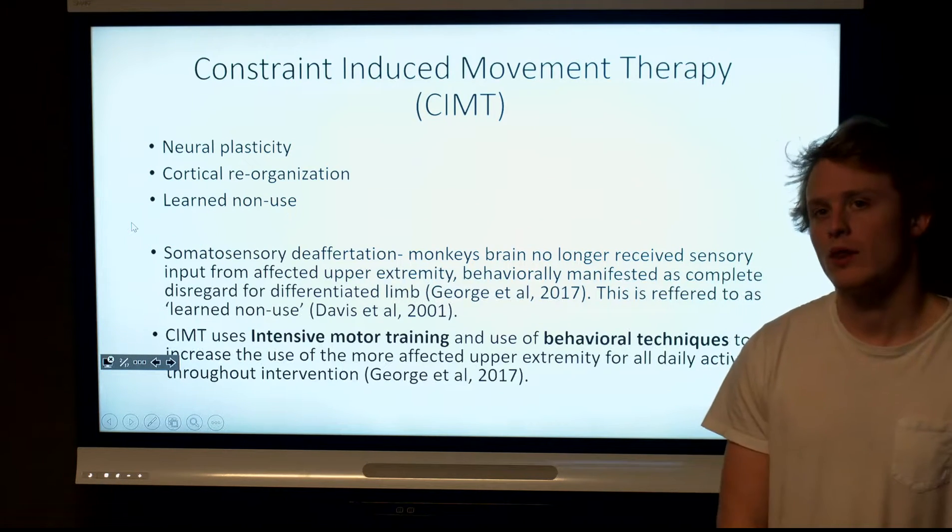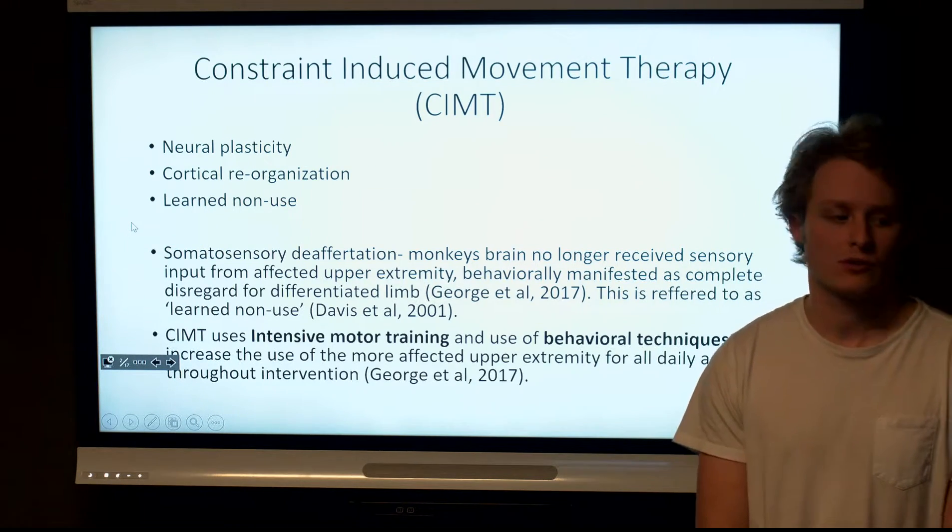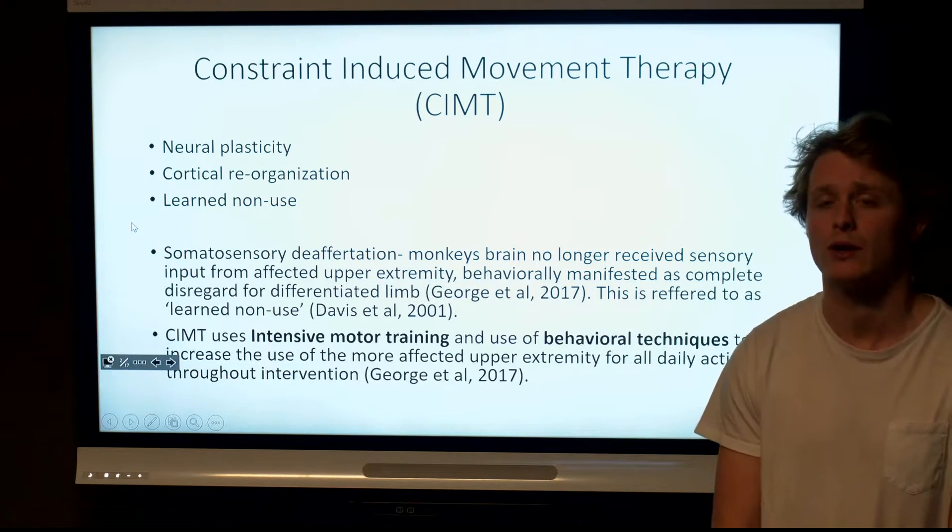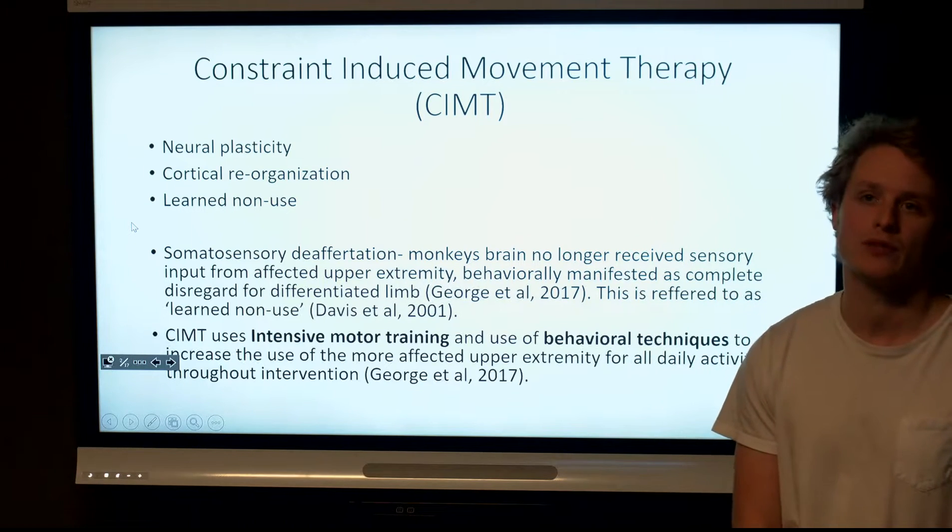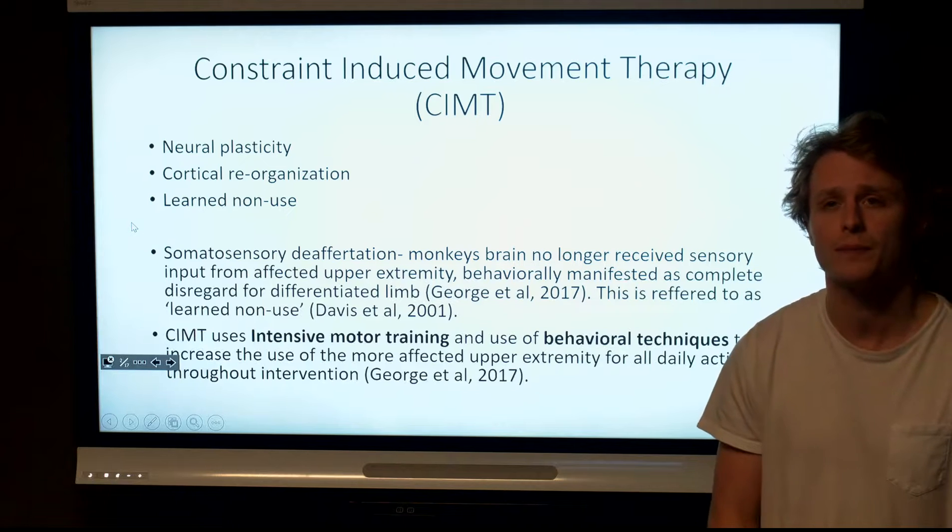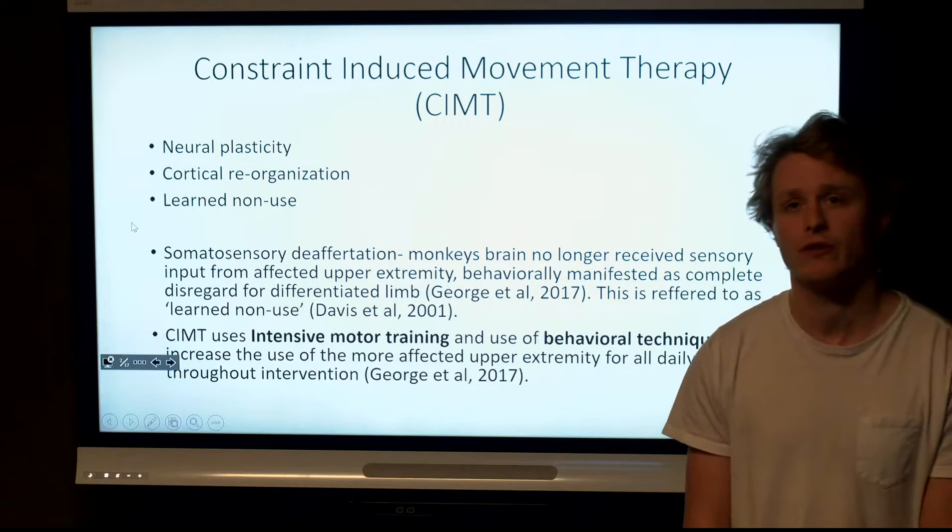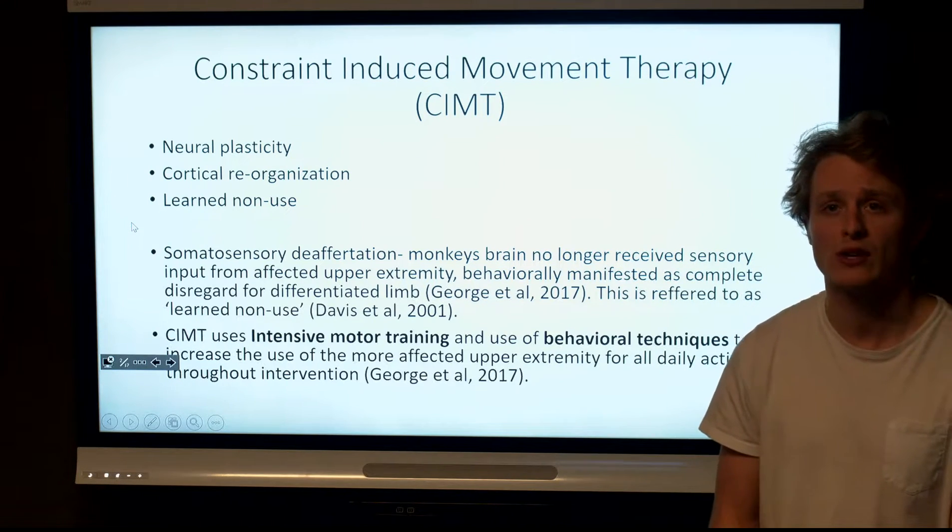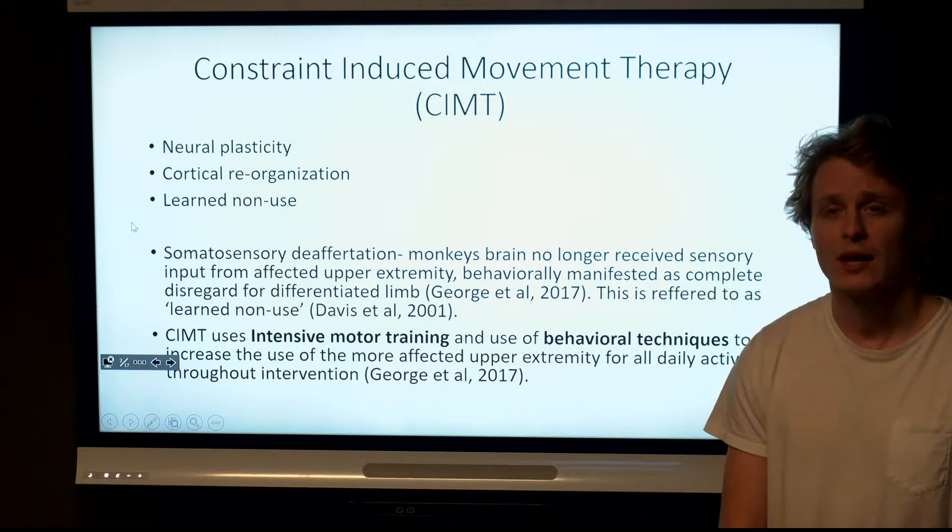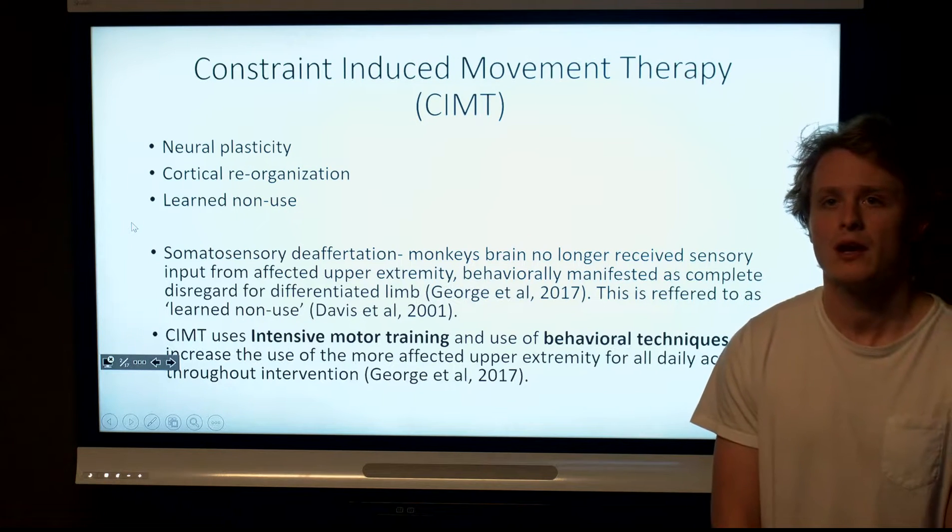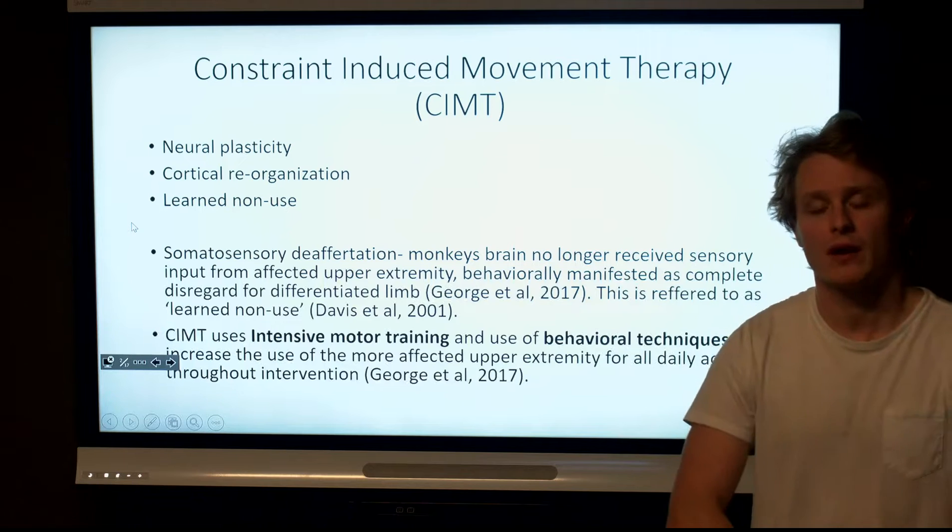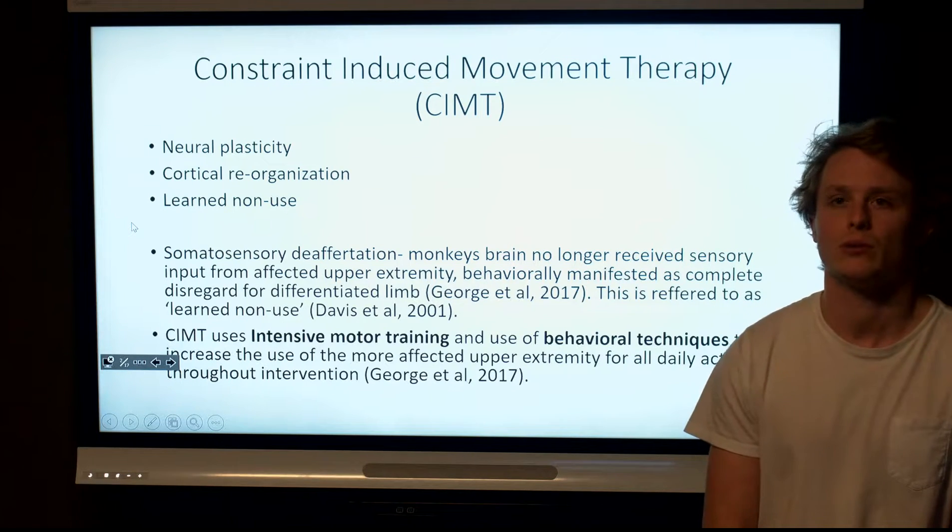The theory behind the Wolf Motor Function Test comes from constraint-induced movement therapy, which is based on neuroplasticity and cortical reorganization. This means that when there is brain damage resulting from a stroke, hemiparesis, or traumatic brain injury, part of the brain is damaged affecting the homunculus, which controls our motor movements. When this damage occurs, there is an attempt by the brain to rewire its circuitry so that the affected limb may compensate and the non-affected part of the brain does not need to be used as it normally would.